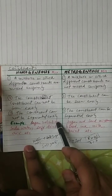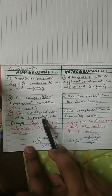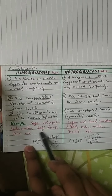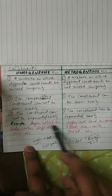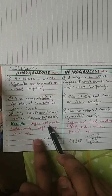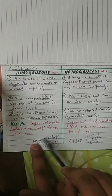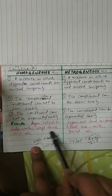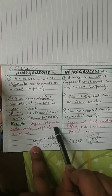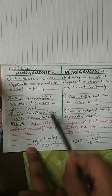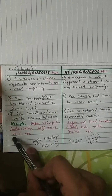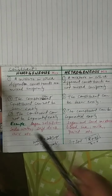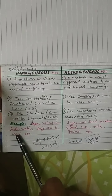Examples of homogeneous mixtures include sugar solution, salt solution, soda water, and soft drink. In a soft drink, water and carbon dioxide are mixed — it is a mixture of gas and liquid that is completely mixed, making it a homogeneous mixture. Air is also a homogeneous mixture.